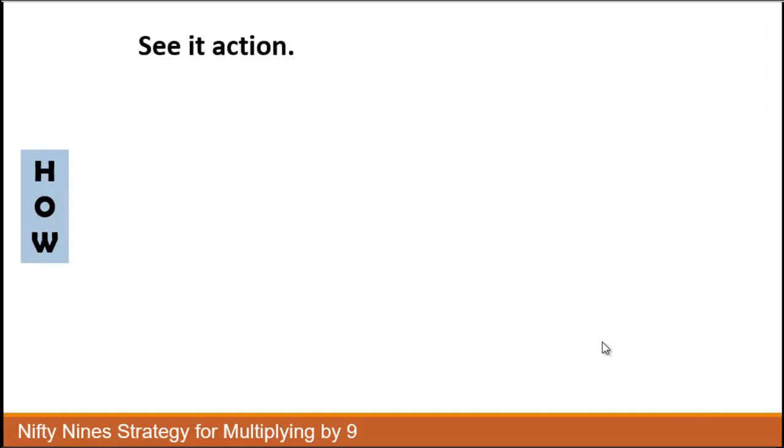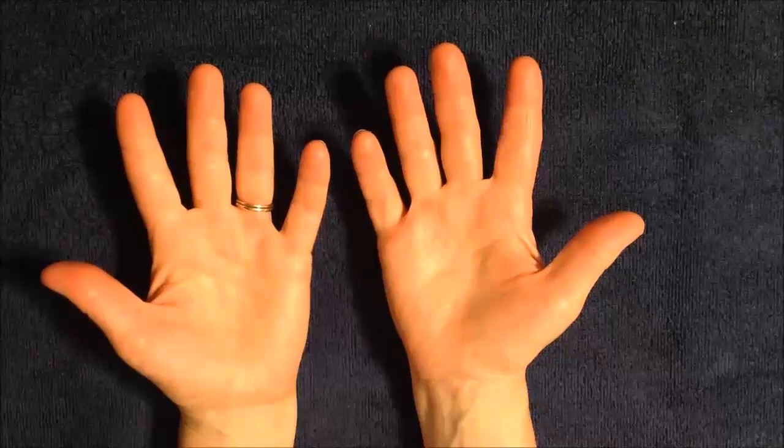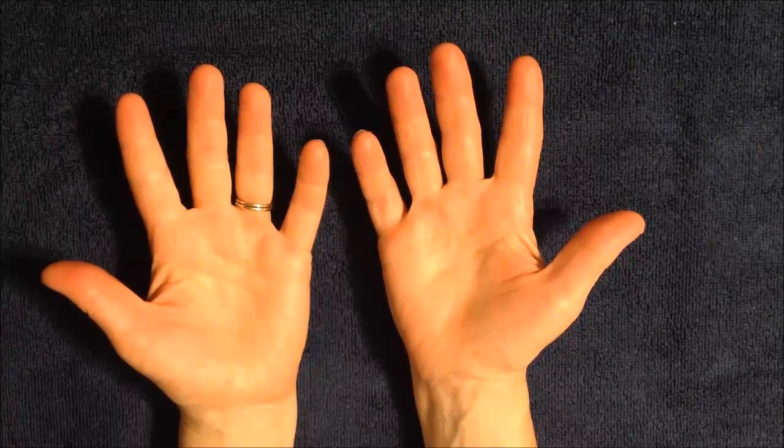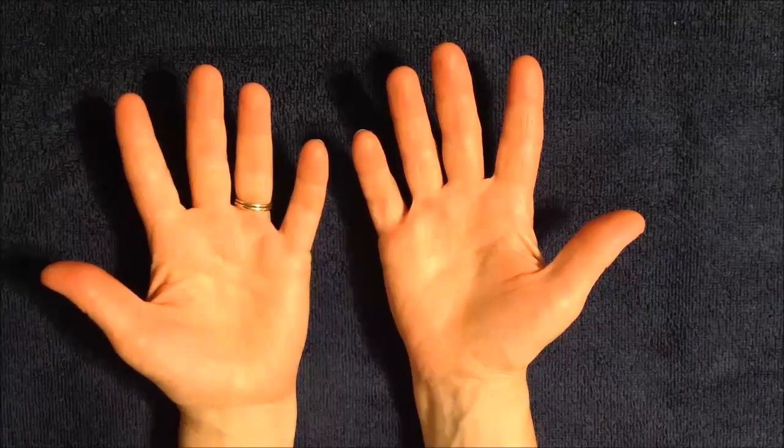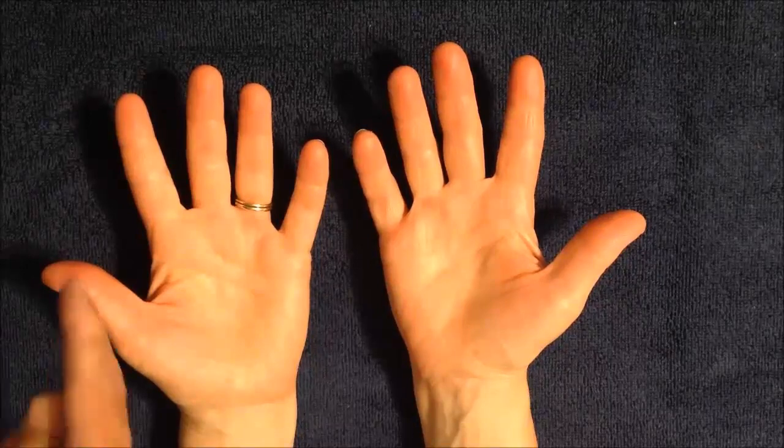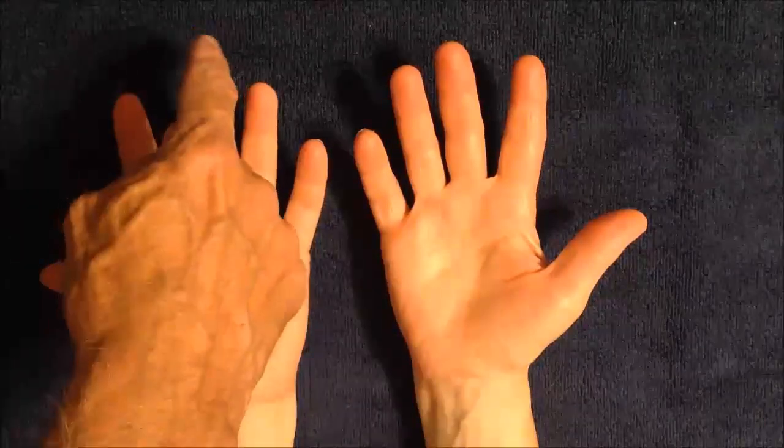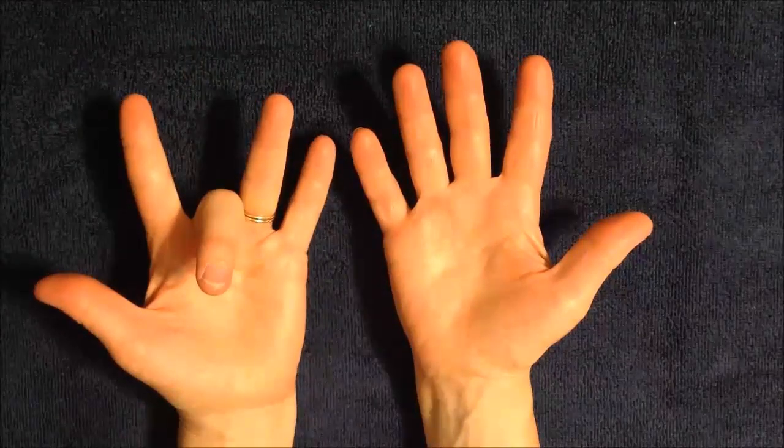Now I'd like to show you this in action with a video. Okay, I'm going to show you the Nifty 9 strategy for using our hands to figure out the 9 facts. The first one we're going to do is 9 times 3. So we start with our palms up. We start from the left and we take the third finger, because we're multiplying by 9 times 3, and fold that down.